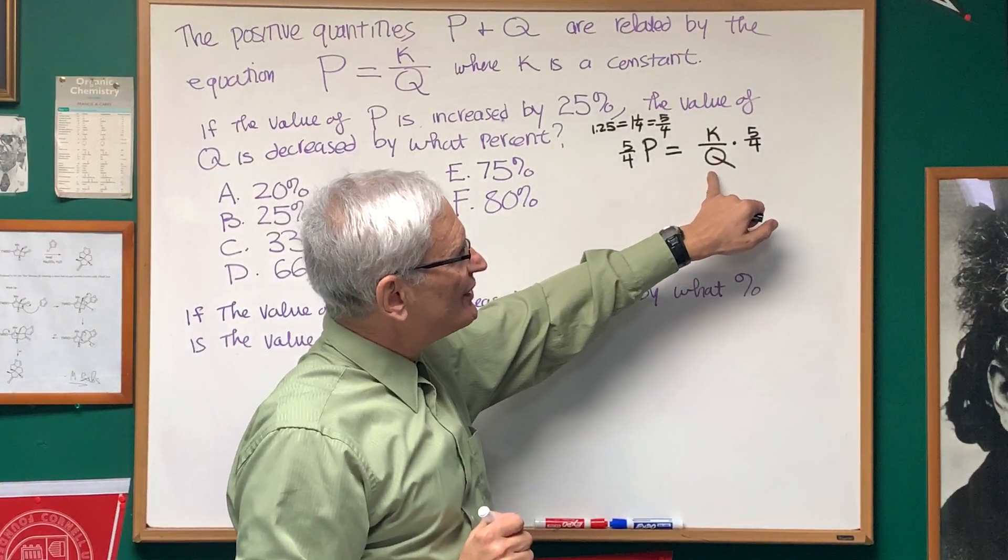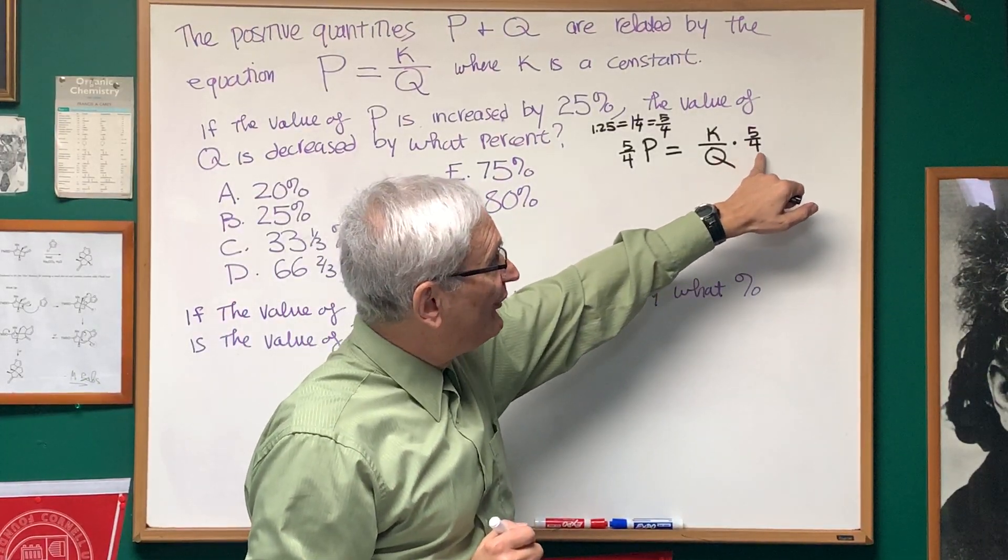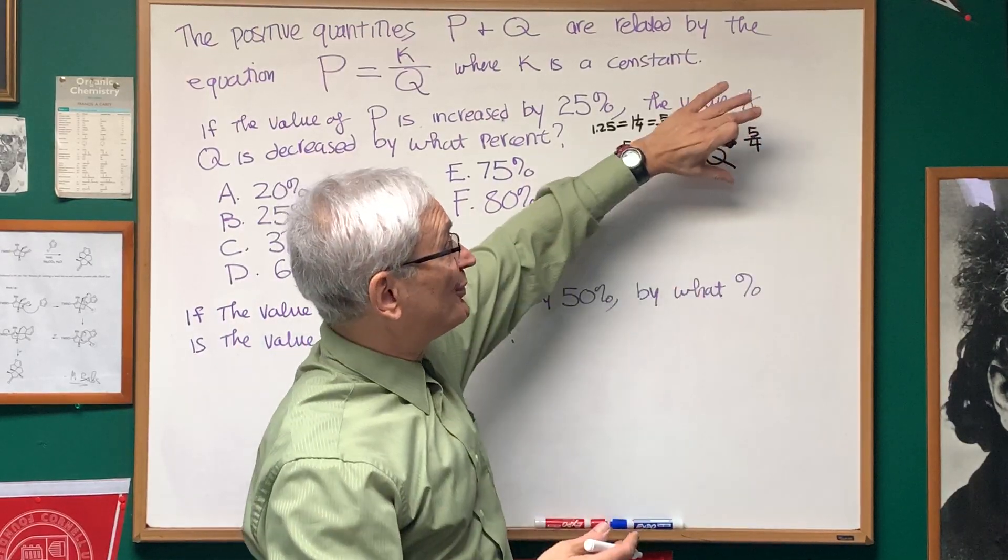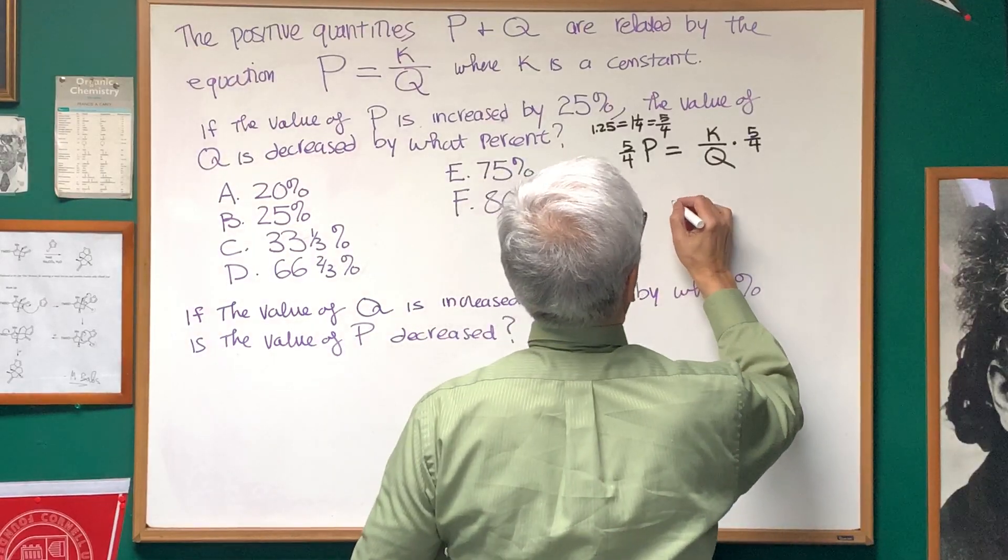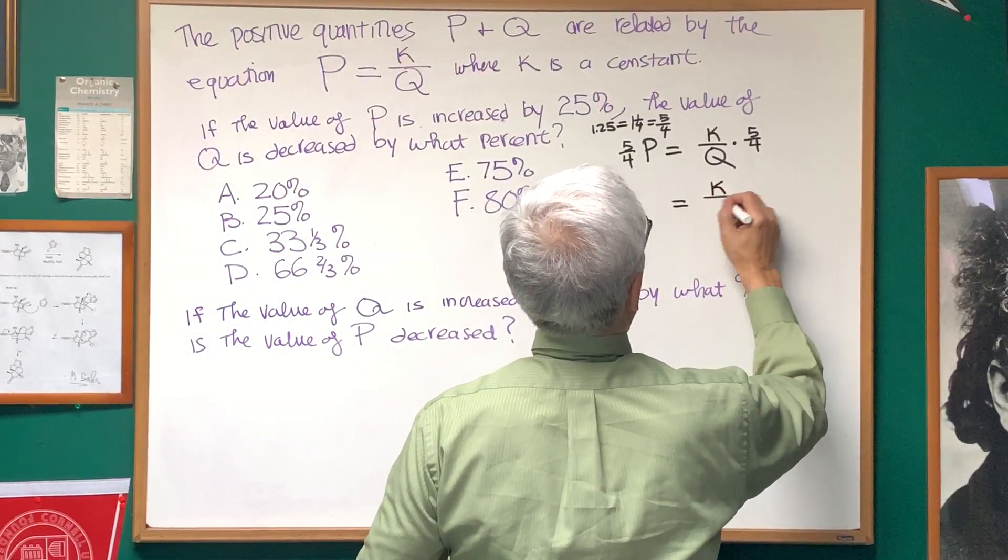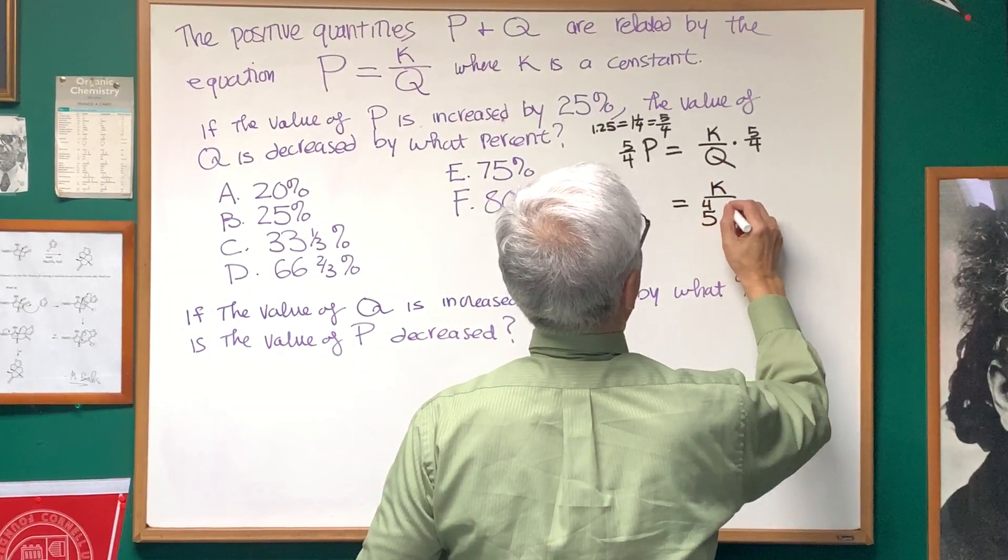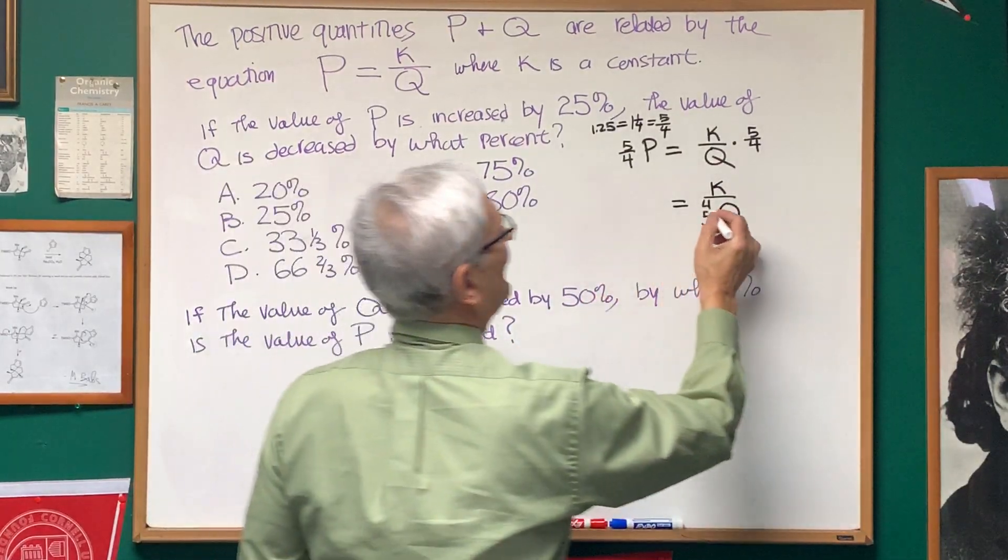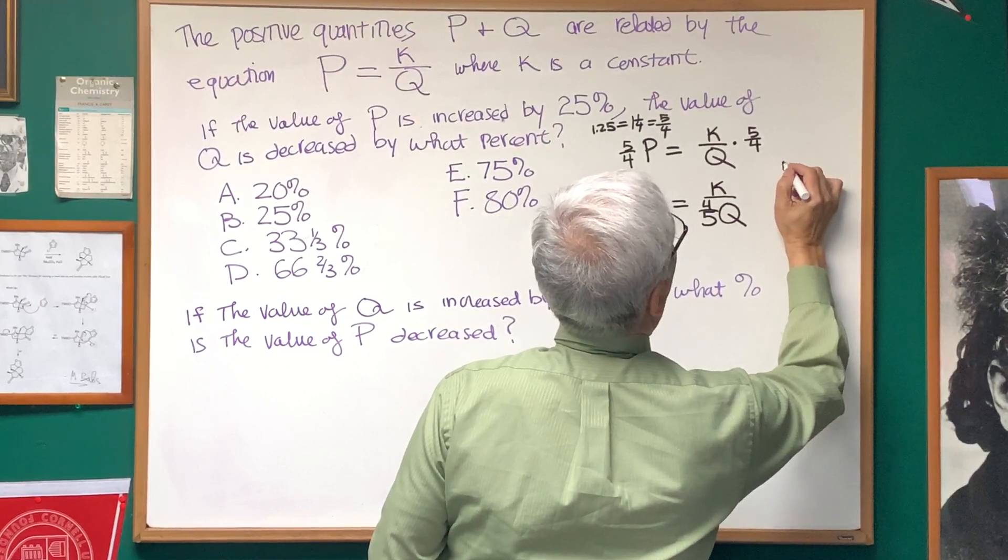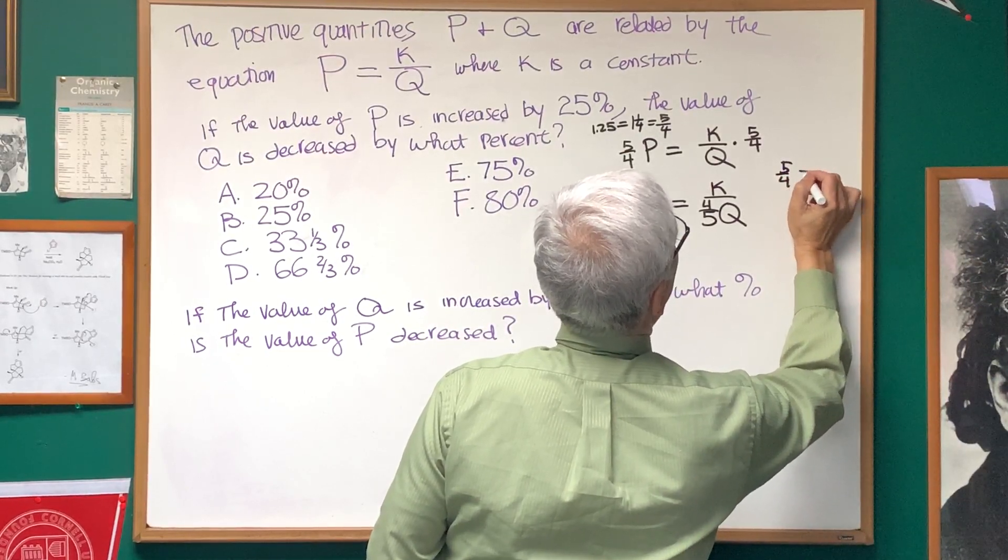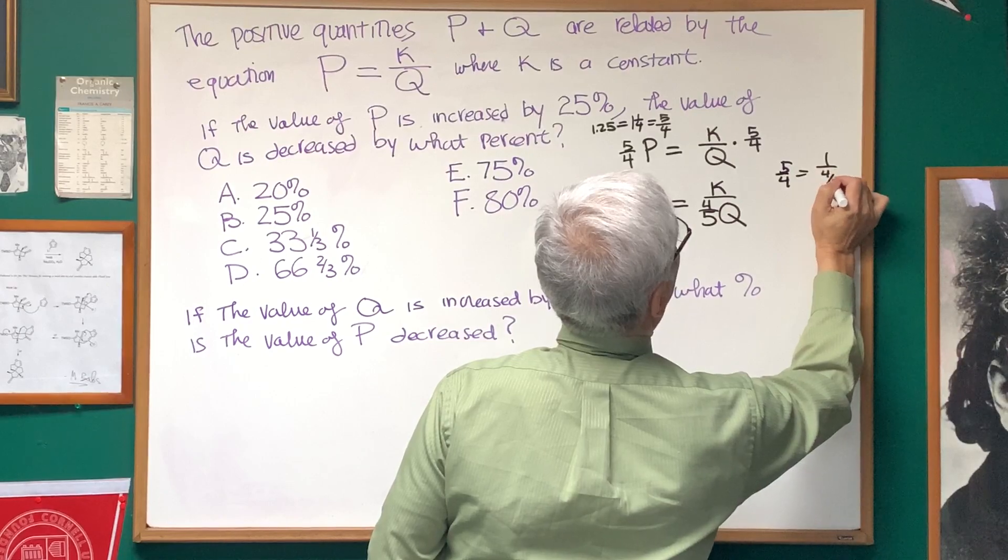Now, since Q is in the denominator, that 5 fourths is actually in the numerator. To bring it to the denominator, we're going to invert it. So, this becomes K times 4 fifths of Q. And that's for the simple reason that 5 fourths is equal to 1 over 4 fifths.